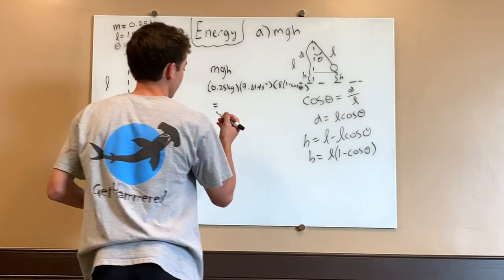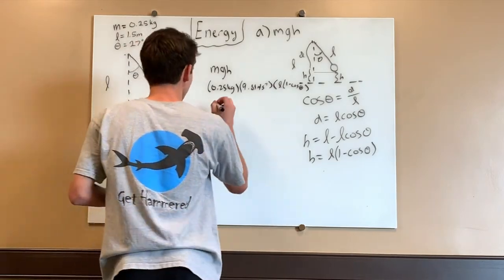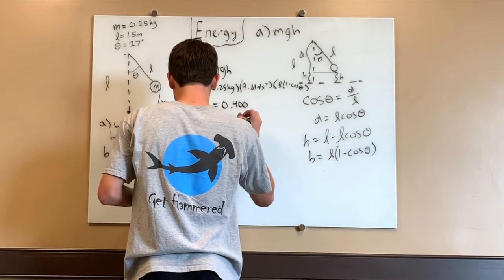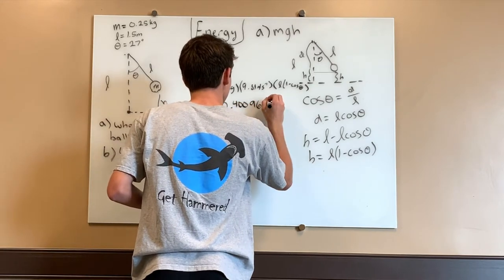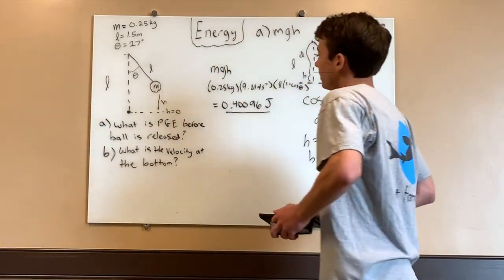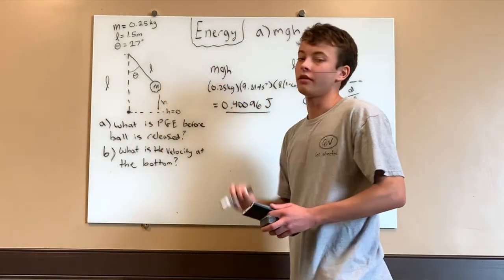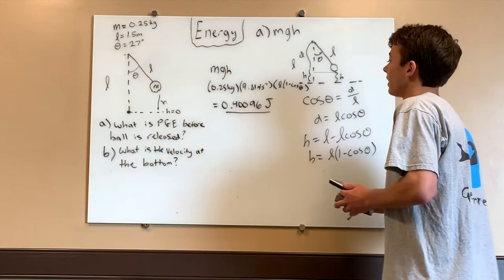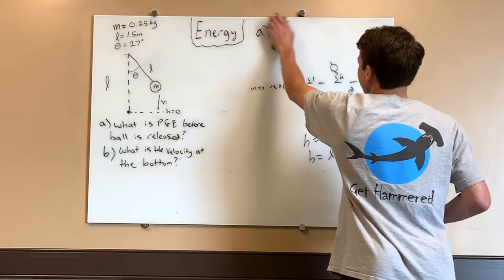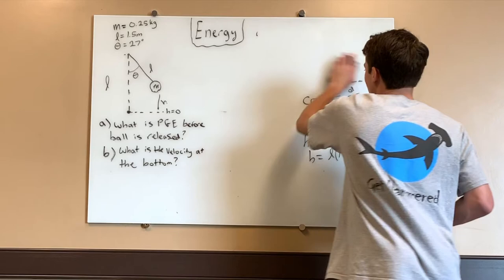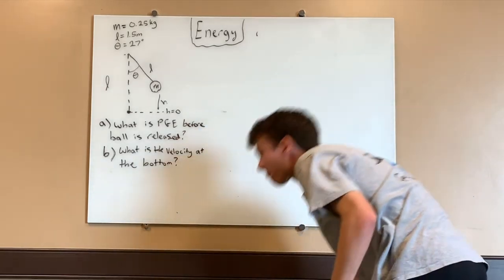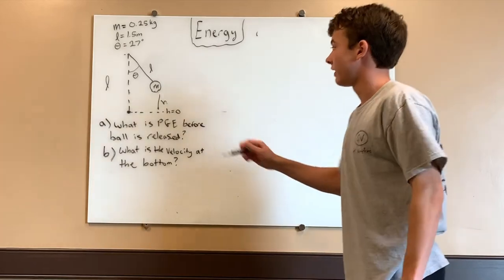We get that our gravitational potential energy at that point is 0.40096 joules. So that is the potential energy at this point: 0.40096 joules.